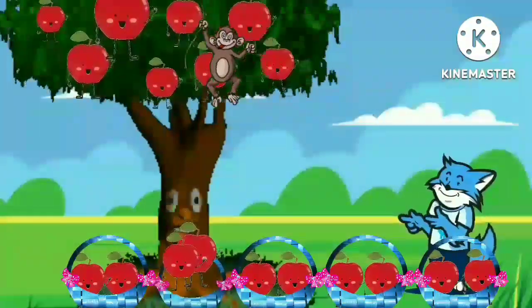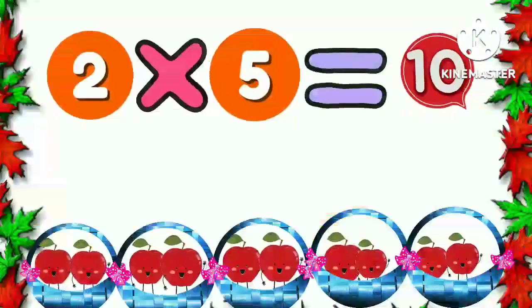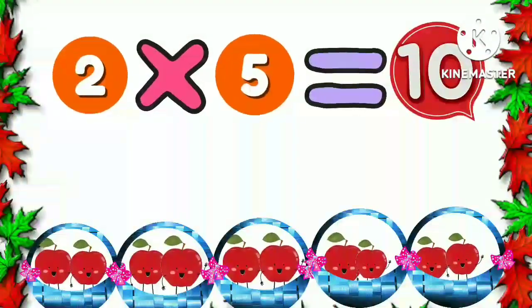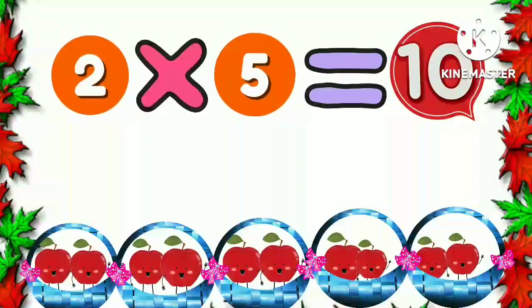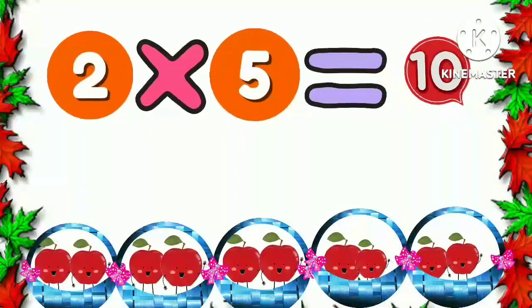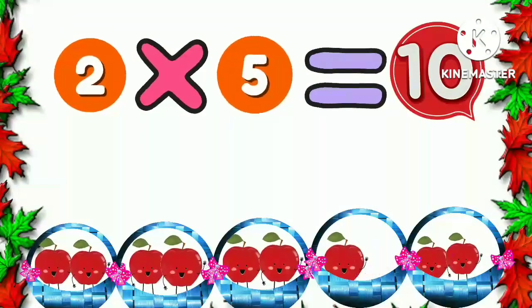The apples fell into the fifth basket. Now we have two apples in each five baskets. Two five times is ten.